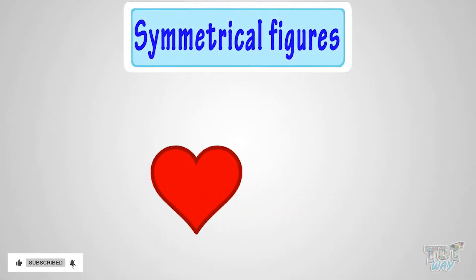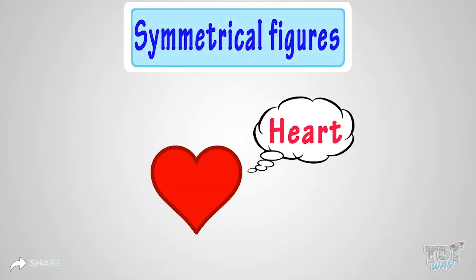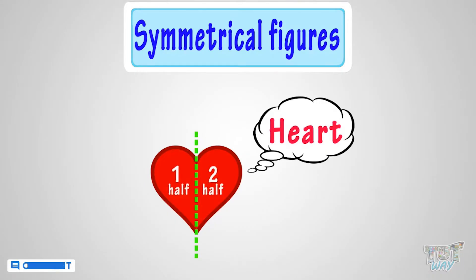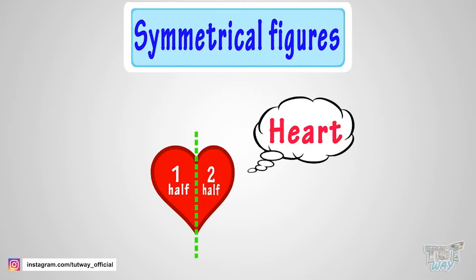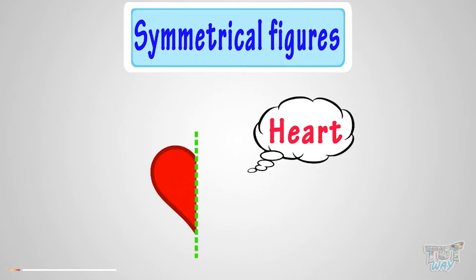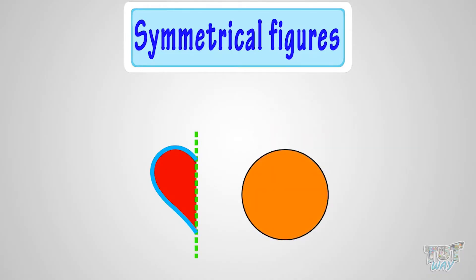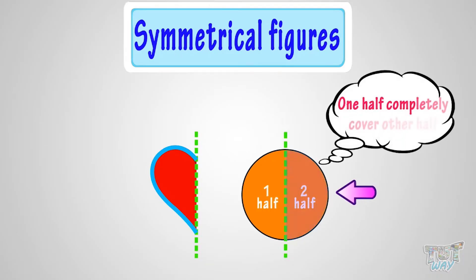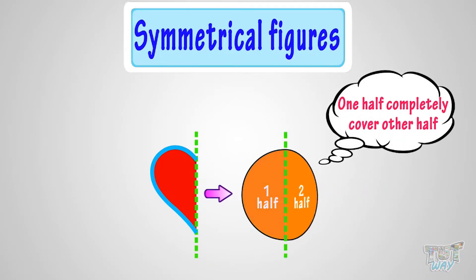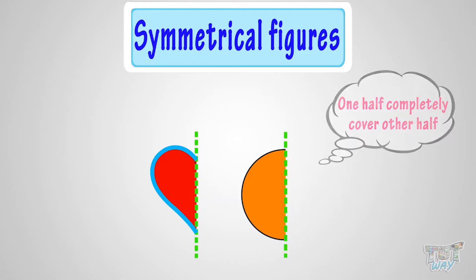Here is an image of a heart. Can you fold it exactly halfway so that its two halves are exactly similar, or one half completely covers the other half? Let's try! Here we are folding it. It completely covers the other half! When you can fold a shape in half and one half exactly covers the other half, we can say that the shape is symmetrical.